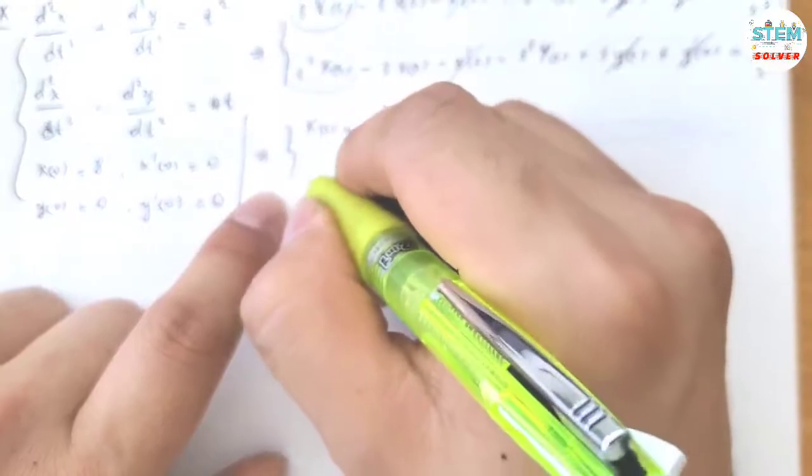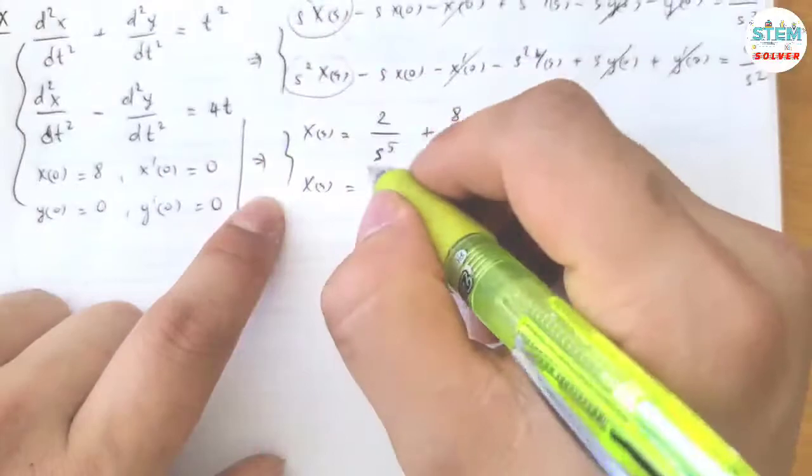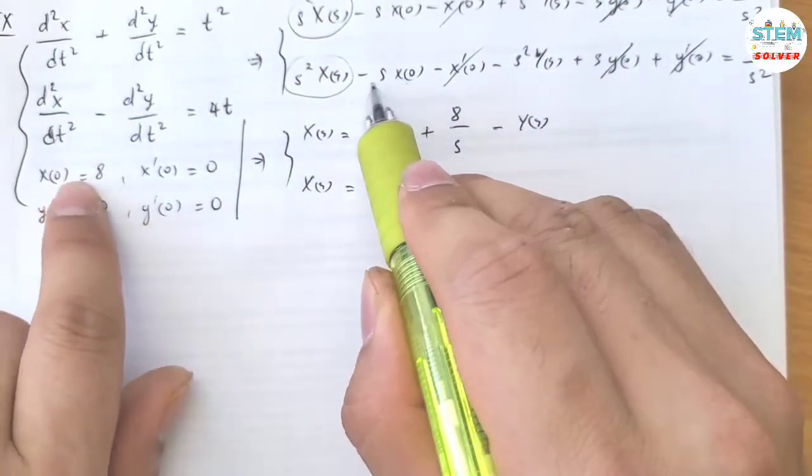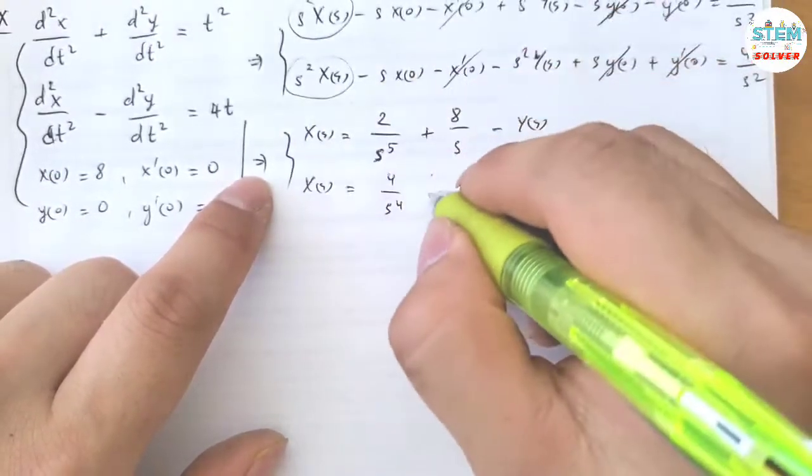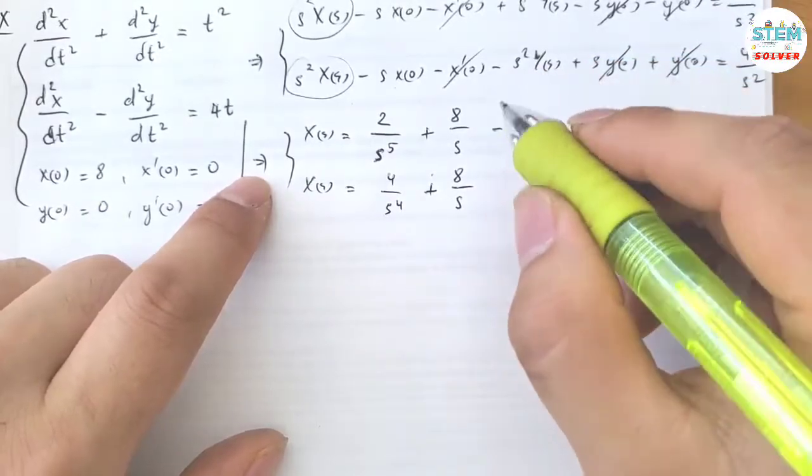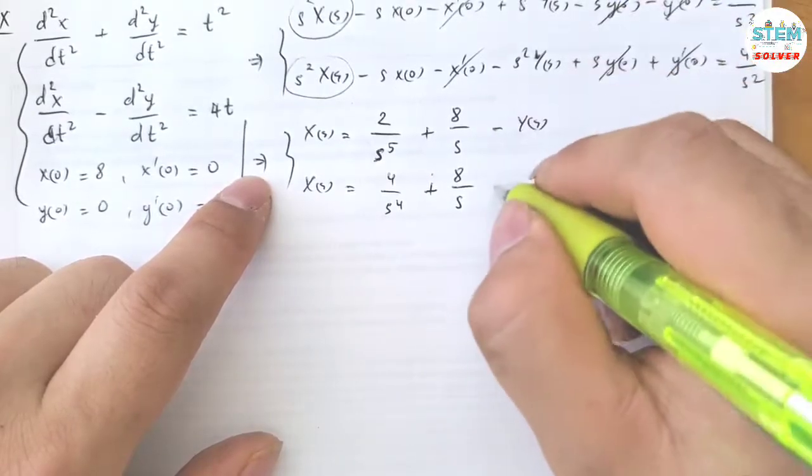This one, 4 over s squared divided by s squared, 4 over s to the fourth. X(0) equals 8, positive 8 over s squared, positive 8 of s. This one plus, so positive Y.